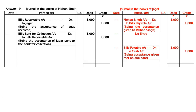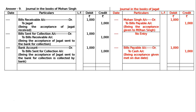And in the books of Mohan Singh, his bank is getting the payment. Hence, it is Bank Account debited Rs.1000 to Bill Sent for Collection Account Rs.1000 — being the acceptance of Jagat sent to the bank for collection, collected by bank.